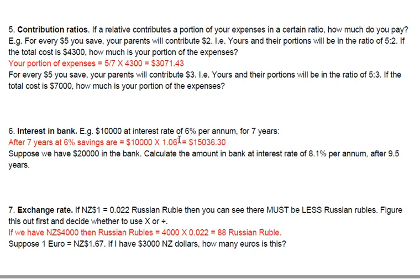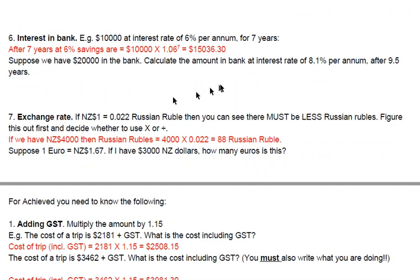So to memorise it: start with the amount, times 1-point, followed by the percentage — remember to put a zero in if it's less than 10%, so 1.06 not 1.6. Then raise it to the power of the number of years. If it's a fraction of a year like 7.5 years, write 7.5. If the interest rate has an extra decimal place, like 6.1%, it would be times 1.061 to the power of 7.